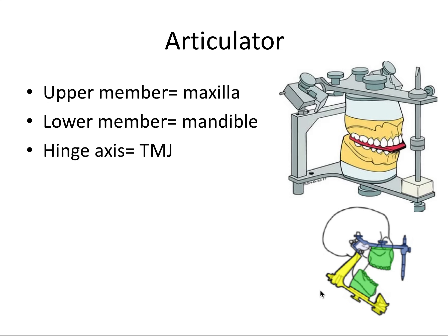The articulator functions as an analog to the human skull. The upper member of the articulator is an analog to the patient's maxilla, the lower member is an analog to the mandible, and the hinge axis of the articulator is an analog to the patient's TMJ. The face bow record transfers the relationship between the maxilla and the rest of the skull from the patient to the articulator — so you use the face bow to tell you where the maxillary cast goes: forward, back, up, tilted, or canted one way or another.